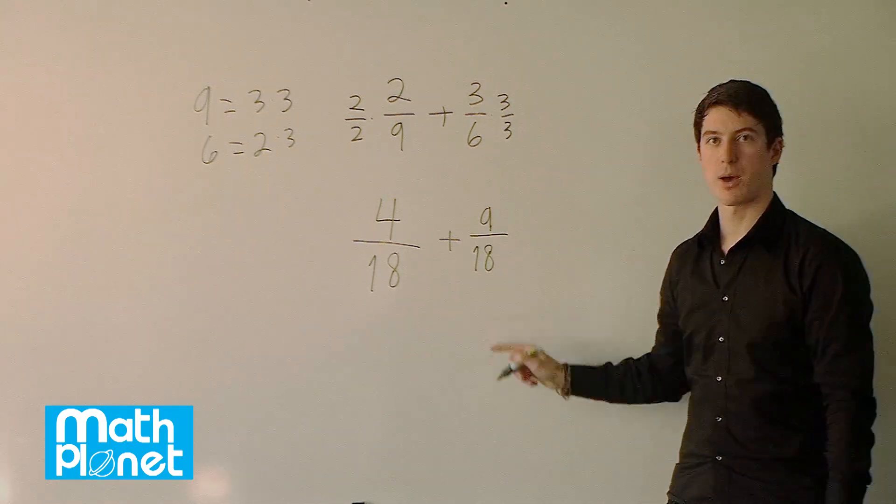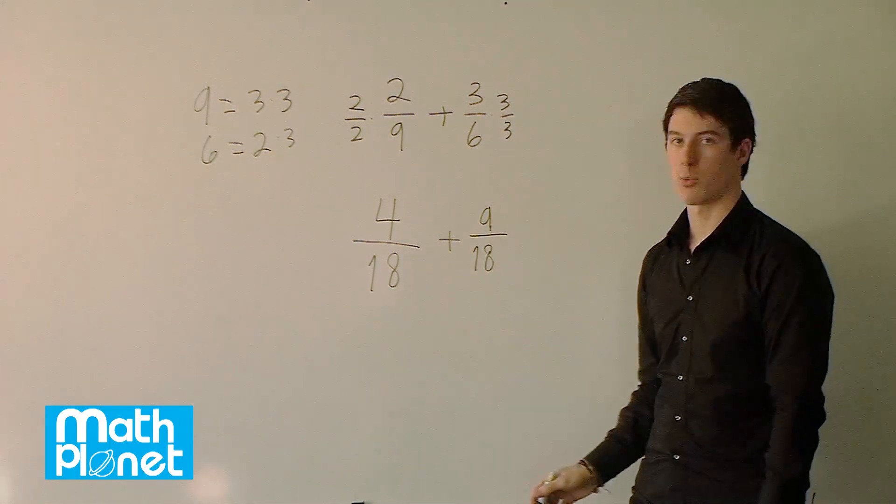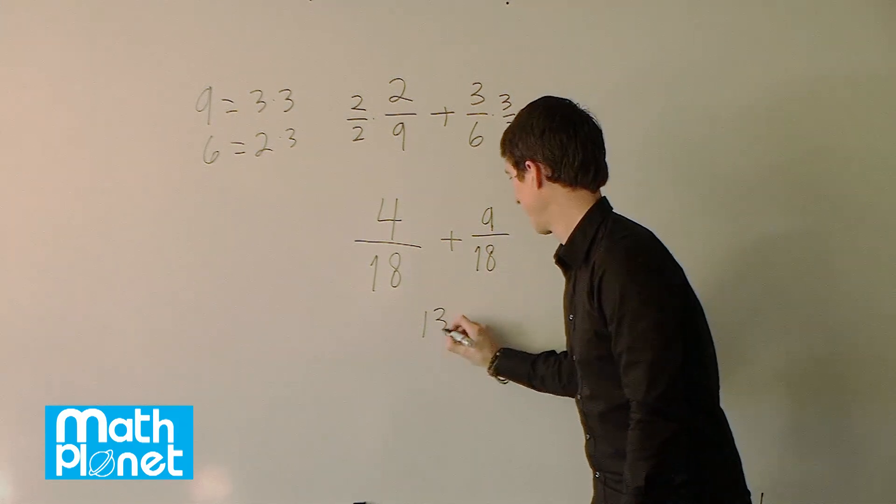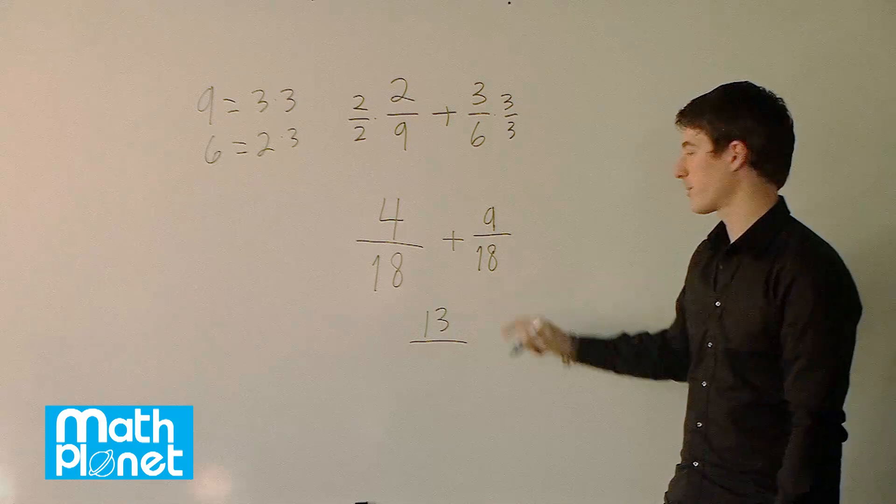Great. So we have common denominators. We can add them up and then we'll be almost done. 4 plus 9 gives us 13. And then we have the common denominator of 18.